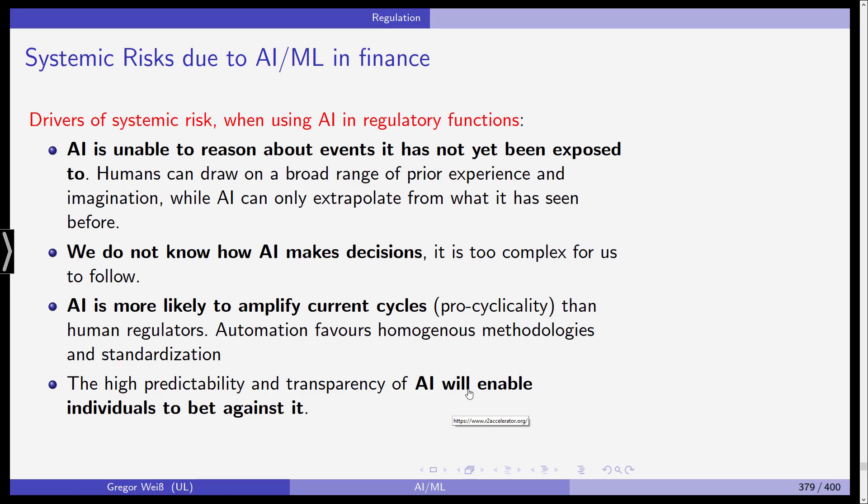Another topic related to supervision and regulation is systemic risk. Financial stability is one main goal in financial supervision — supervisors aim to prevent financial crises. The question is how AI and ML and their usage in finance relate to systemic risk. There are two sides to this: one is that AI and ML can be used by financial institutions to better track risk exposure and manage risks.